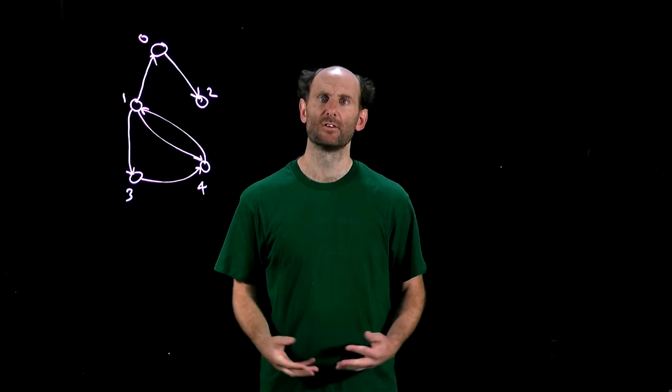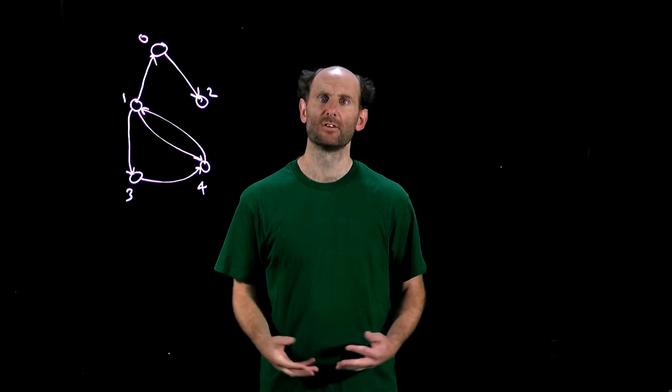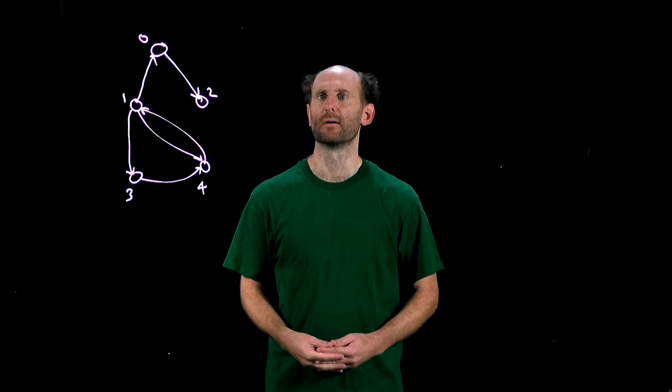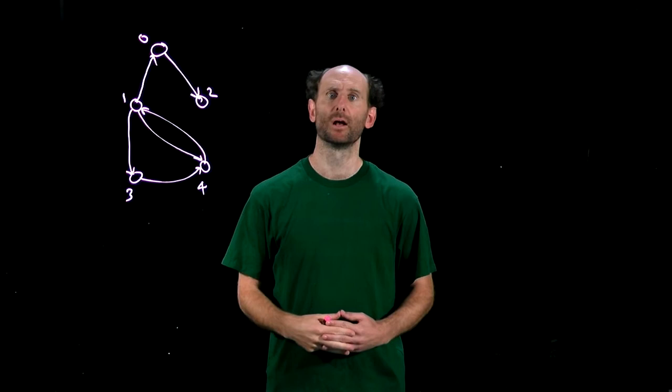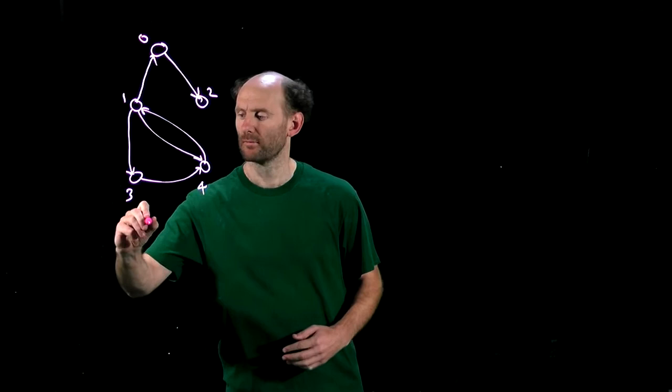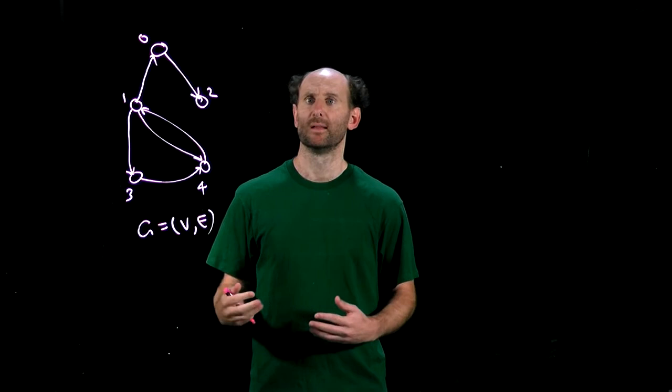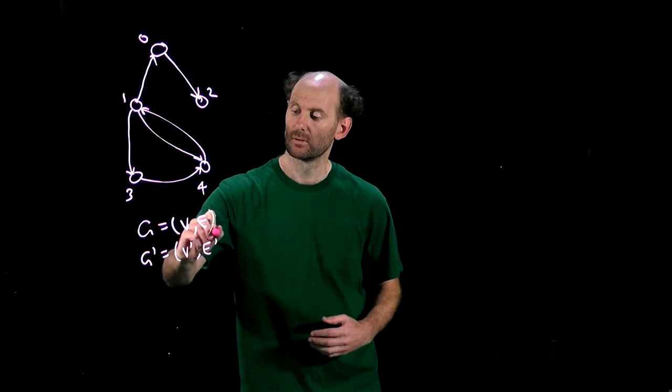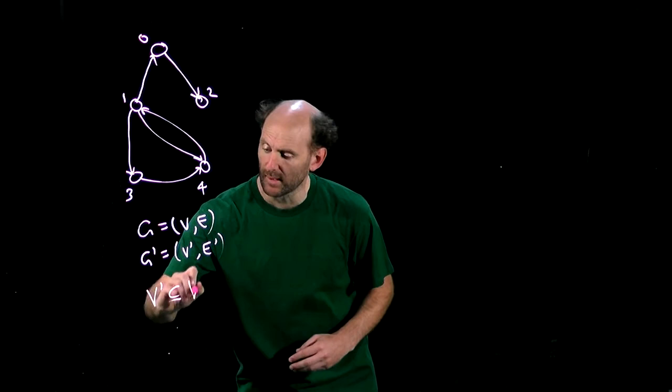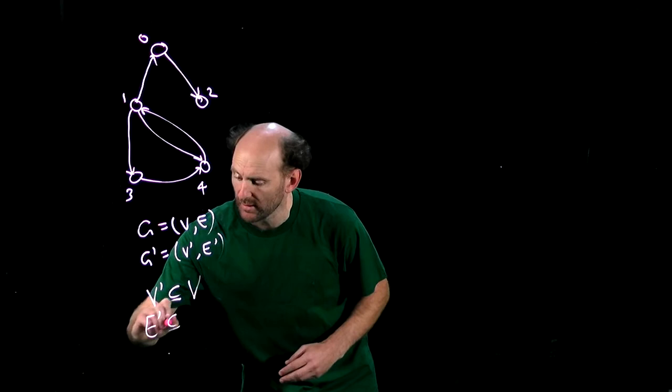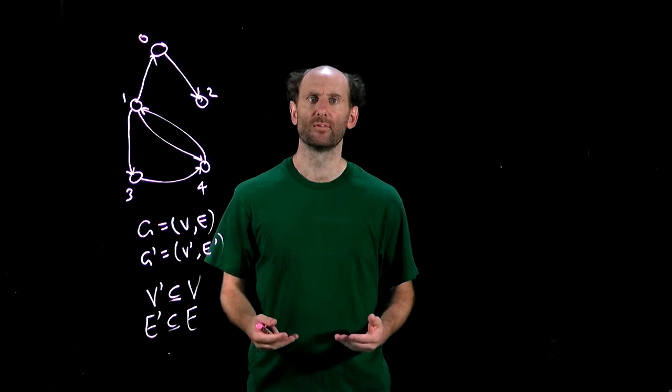Let's finish our definitions by looking at some common ways in which we can manipulate digraphs to create related graphs or digraphs. We'll start by defining the sub-digraph of a digraph. Given a digraph G = (V, E), a sub-digraph is any digraph G' = (V', E') where the node set V' is a subset of the original node set V, and the arc set E' is a subset of the original arc set E. Notice that G' still needs to be a digraph.